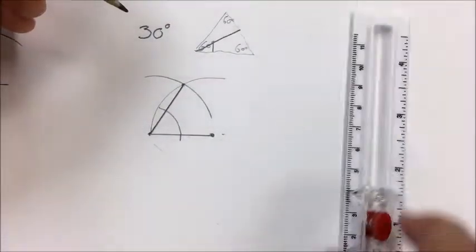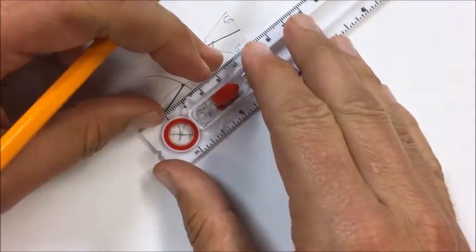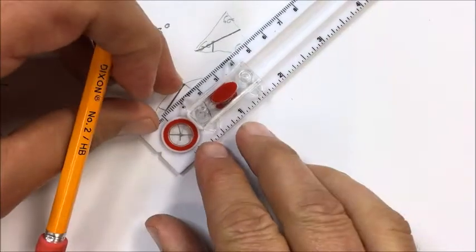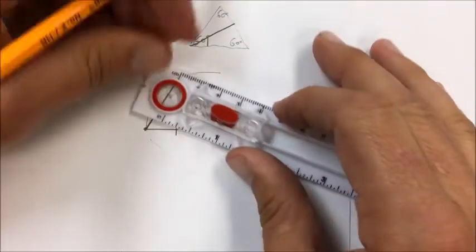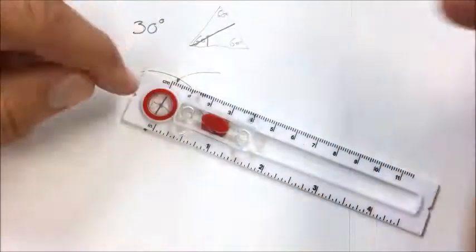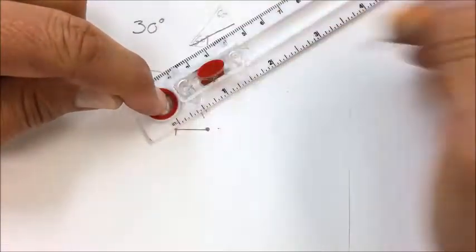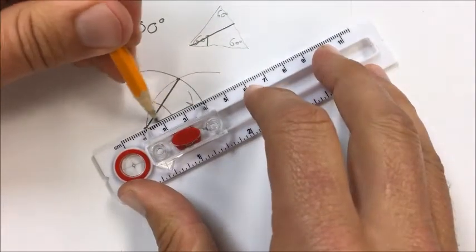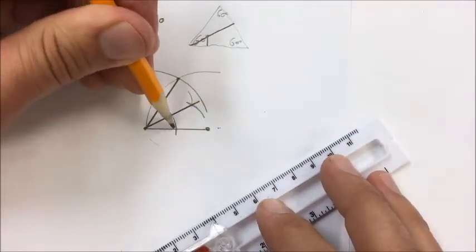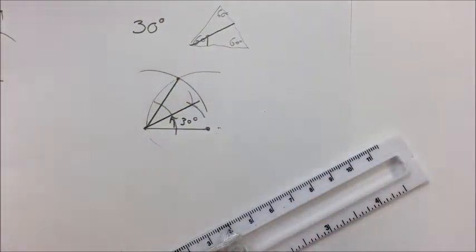Arc it, bisecting the angle. Arc it from both of those new intersections. The whole thing was 60, so this part right here must be 30.